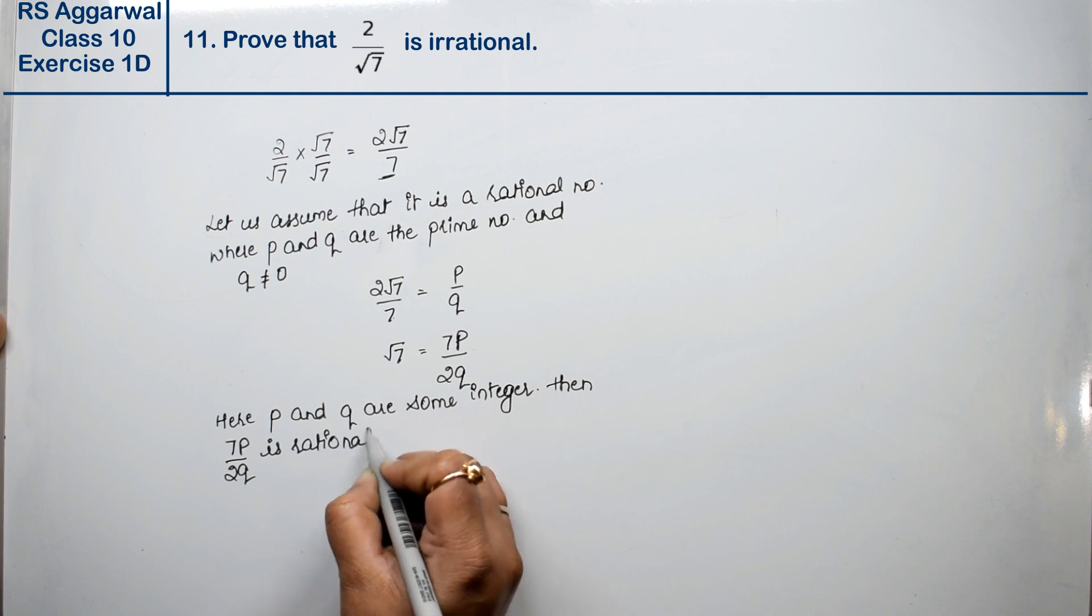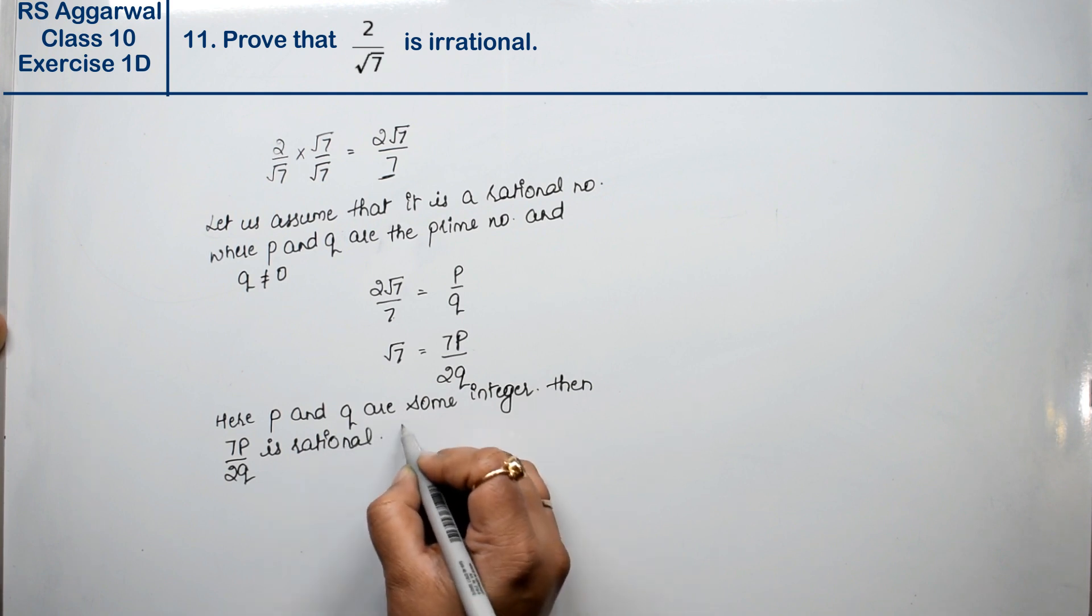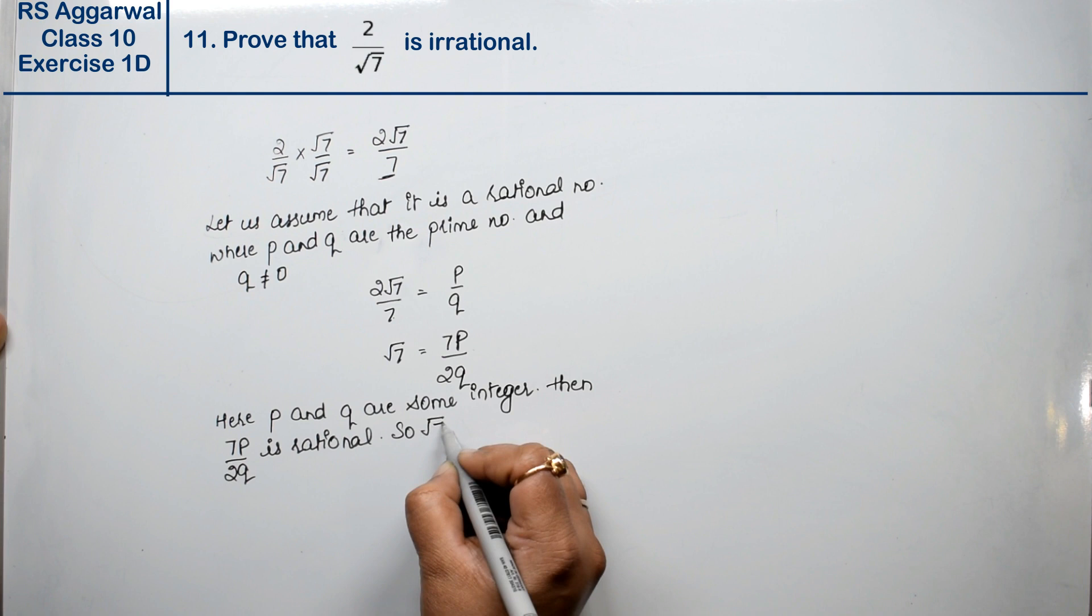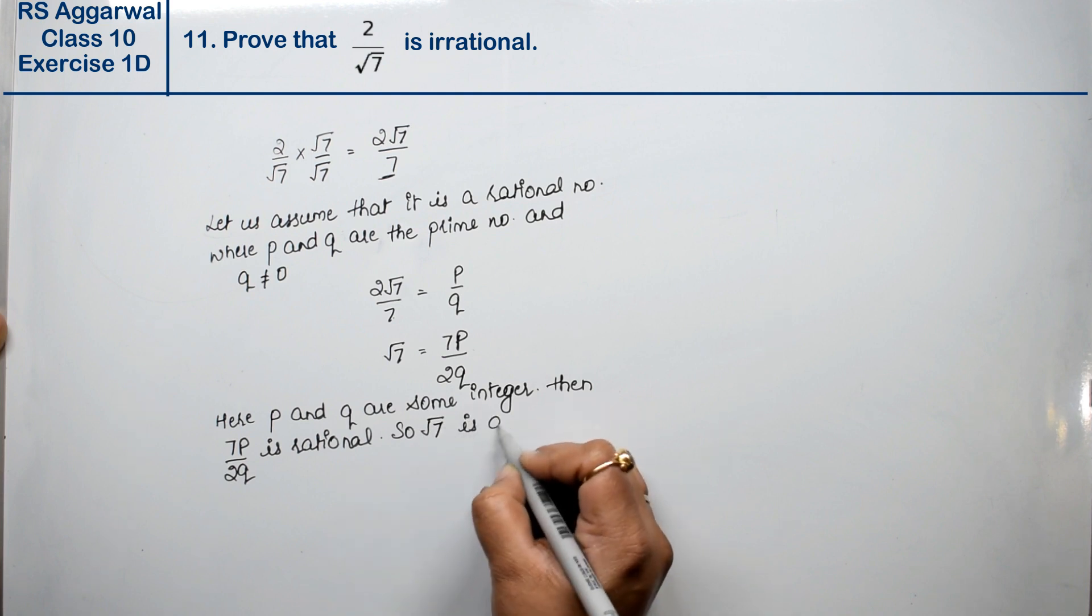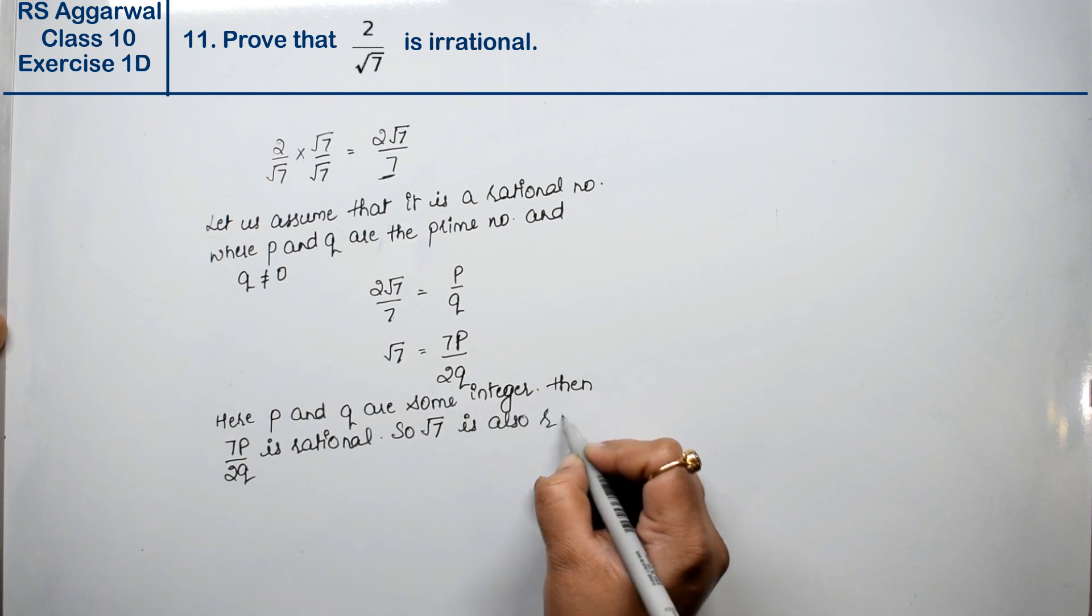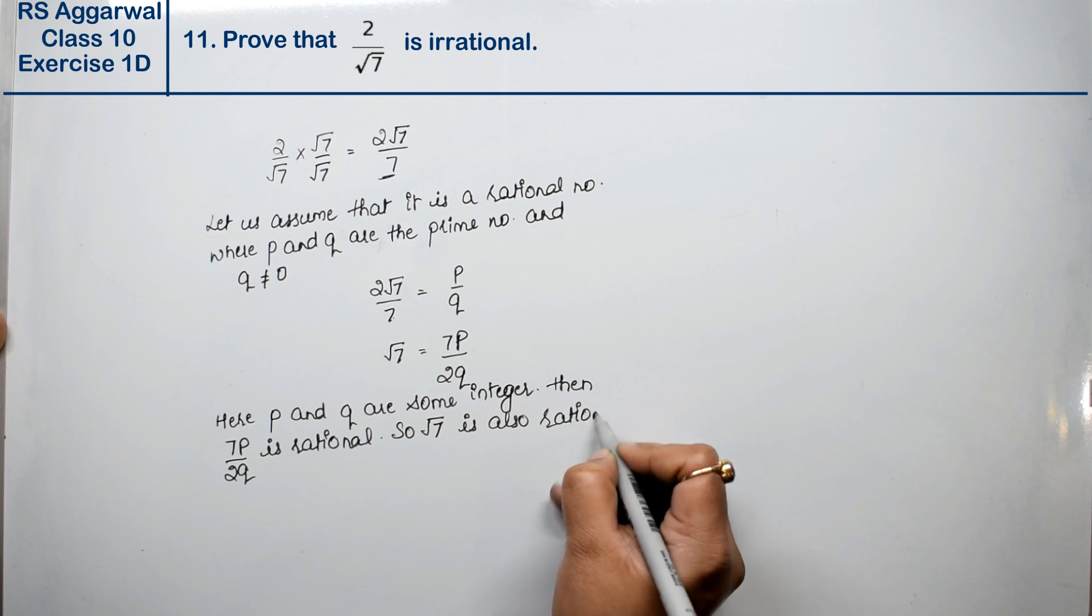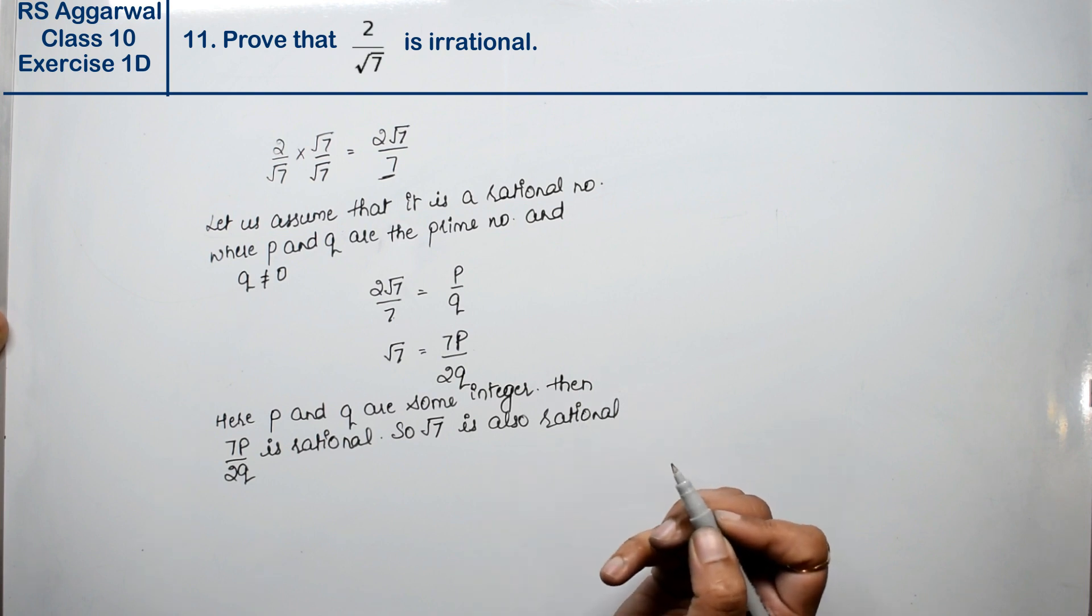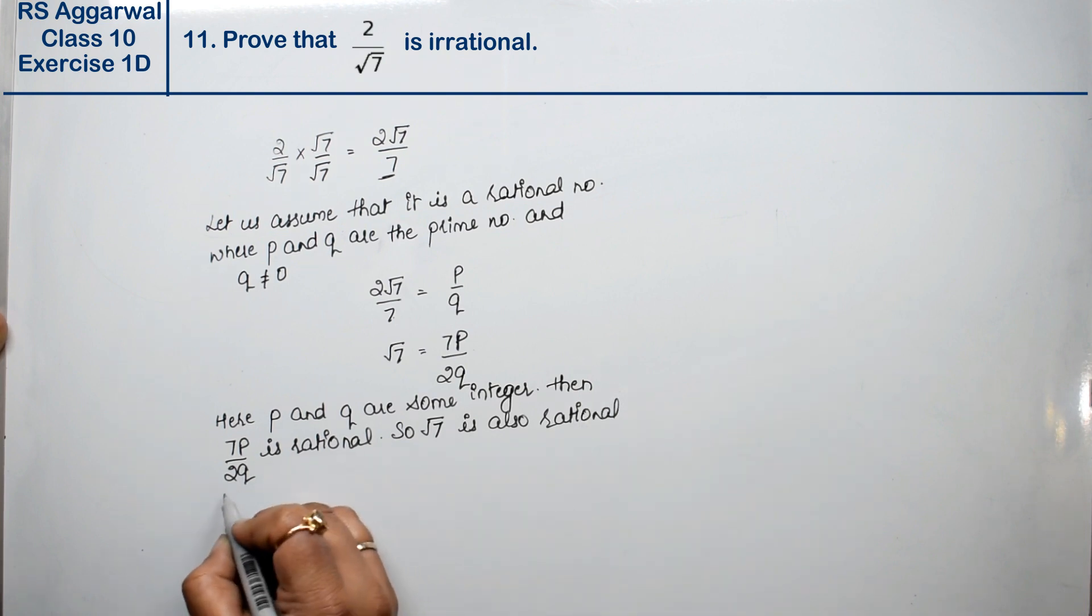And if it is rational, then root 7 is also rational. But we know that root 7 is irrational.